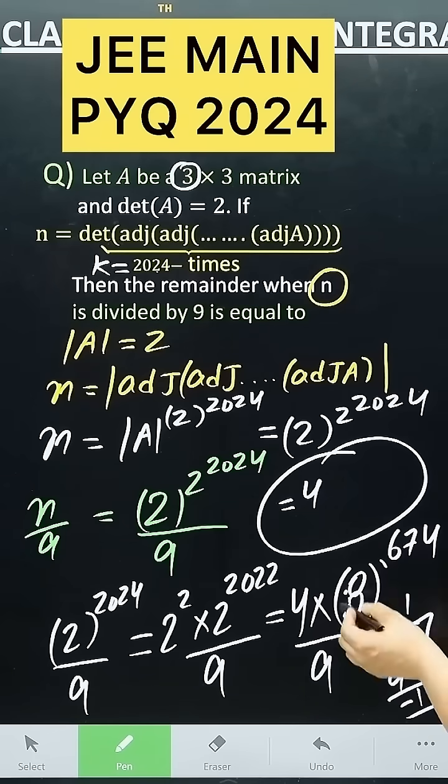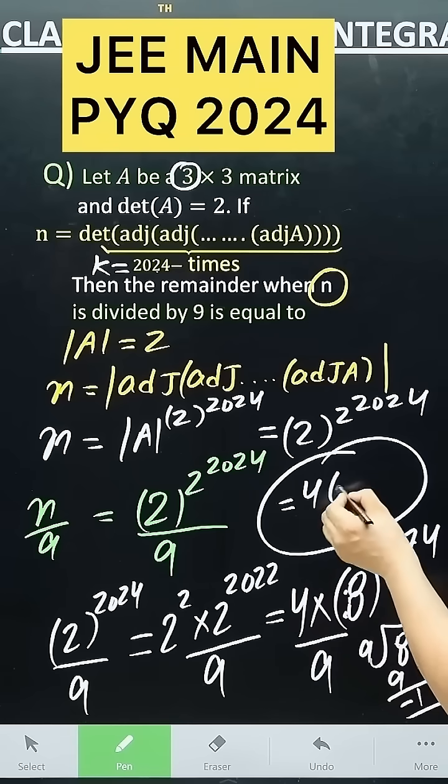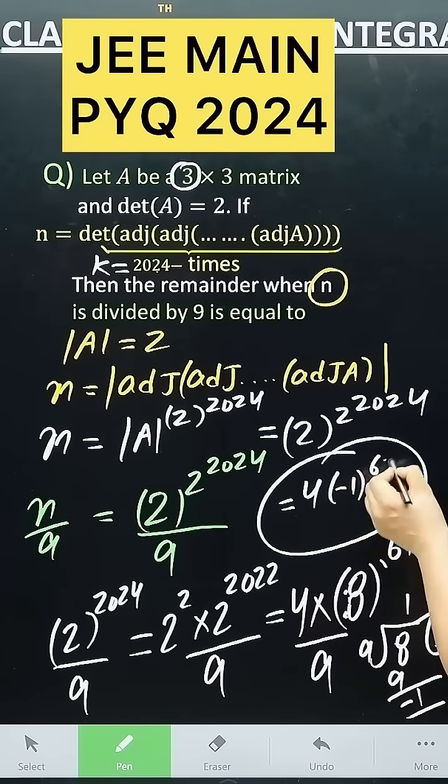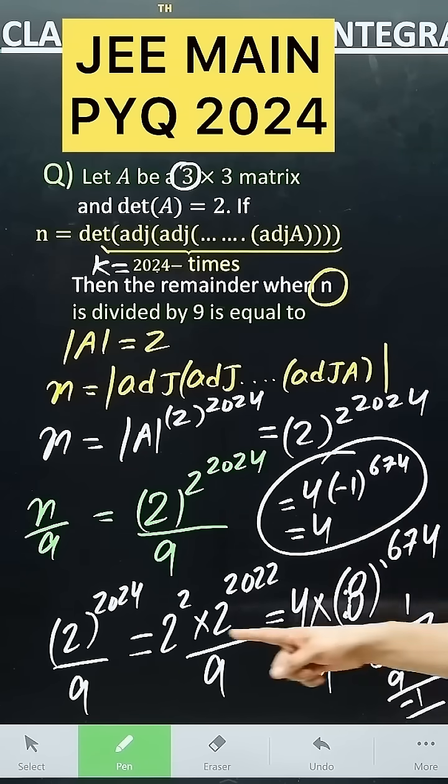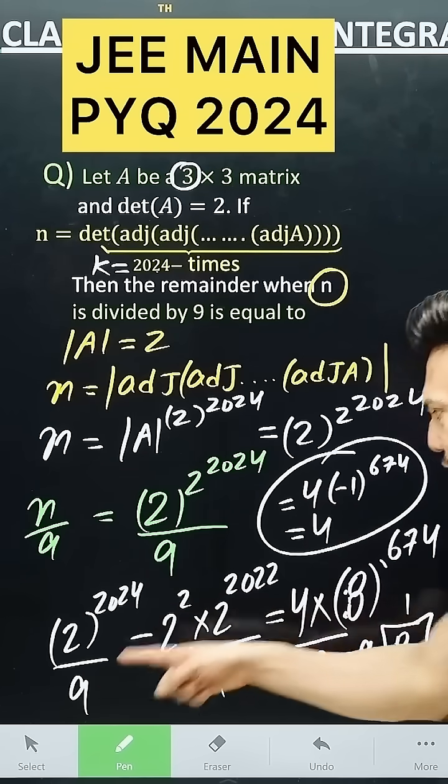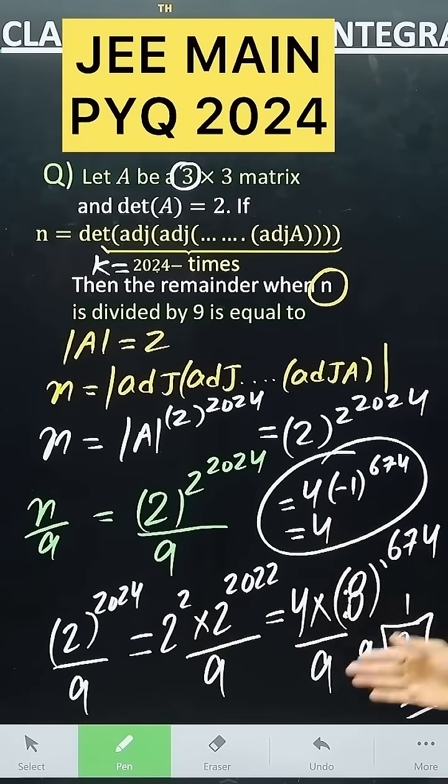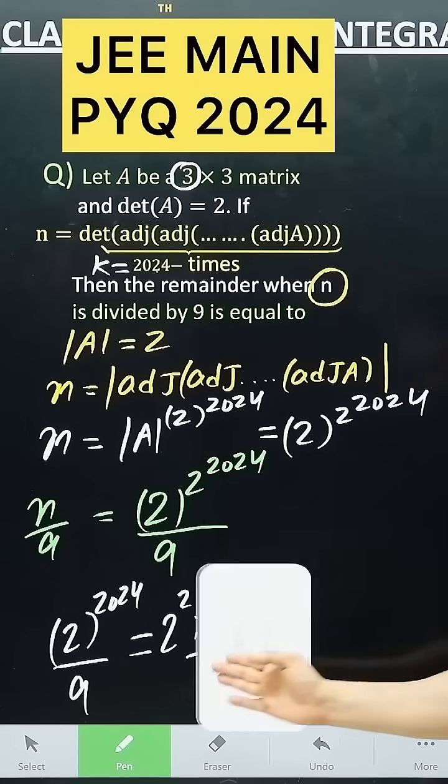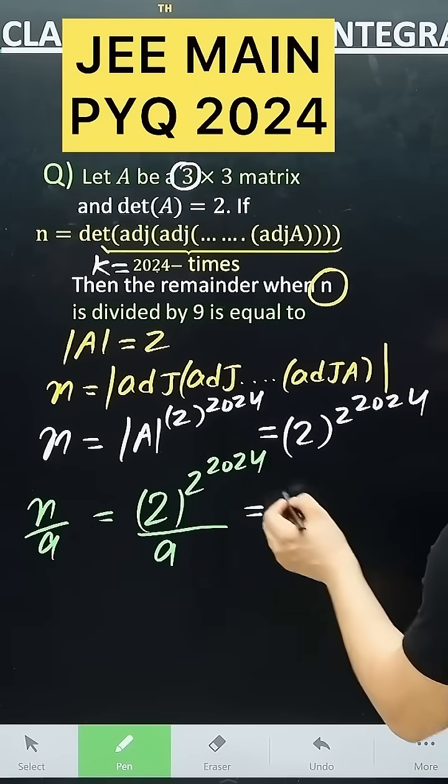So after solving this, the remainder that will come out will be 4 times minus 1 to the power 674. Now if you raise it to the power of minus 1, you will get 4. So when you divided the power, the remainder came out to be 4.